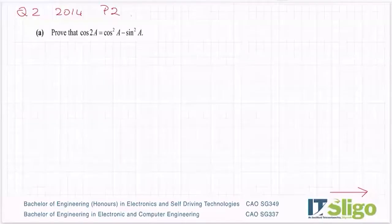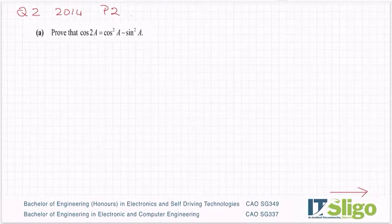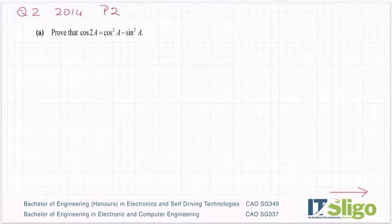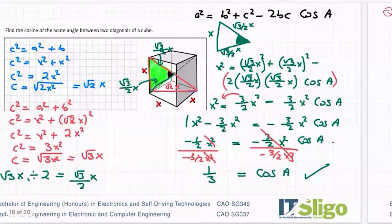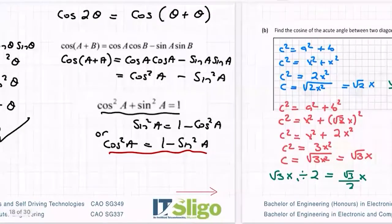Let's have a look at this one. It was question two on the 2014 paper. Part A was prove that cos 2a is equal to cos squared of a minus sine squared of a. So very much like the one we did in the last class, which was in the 2019 paper.